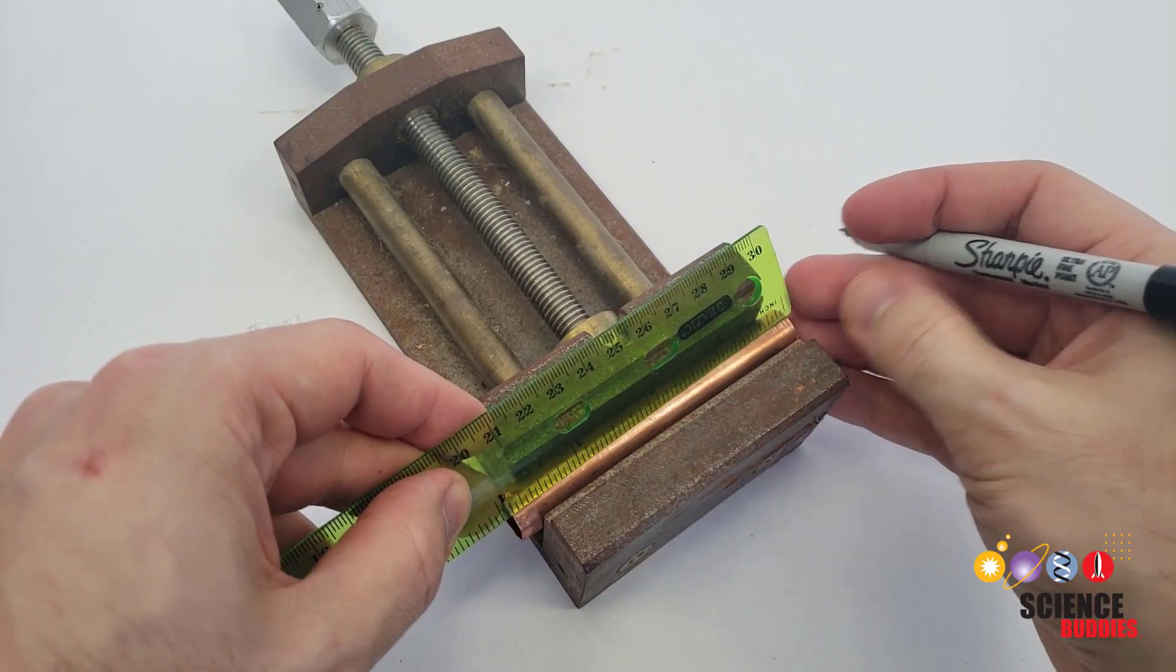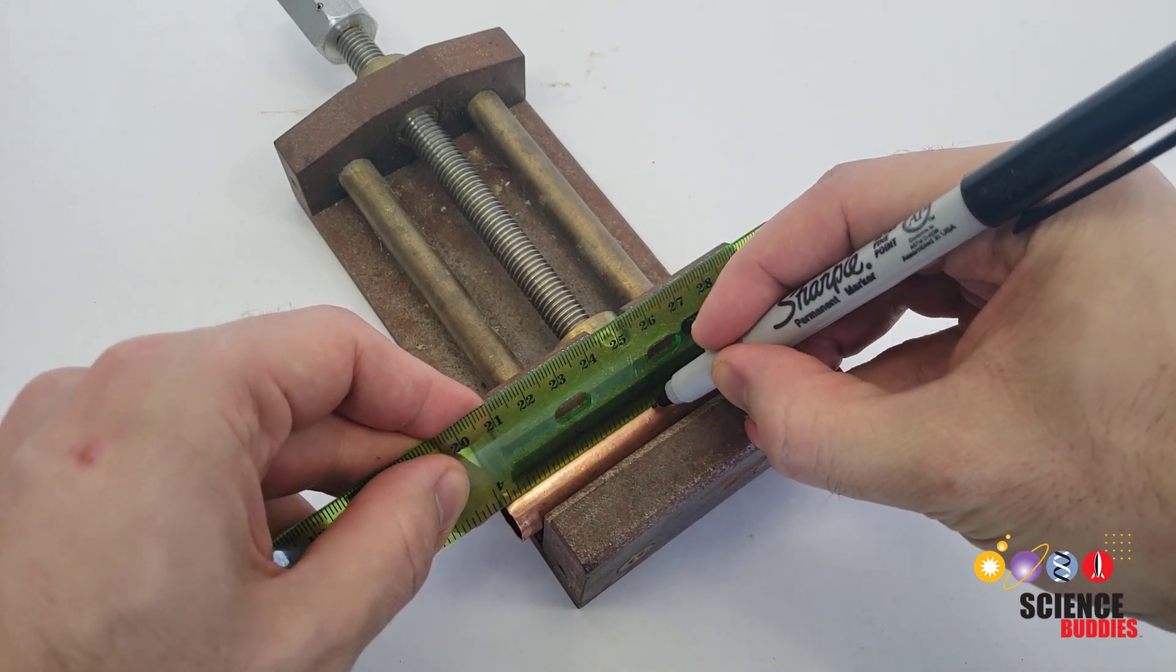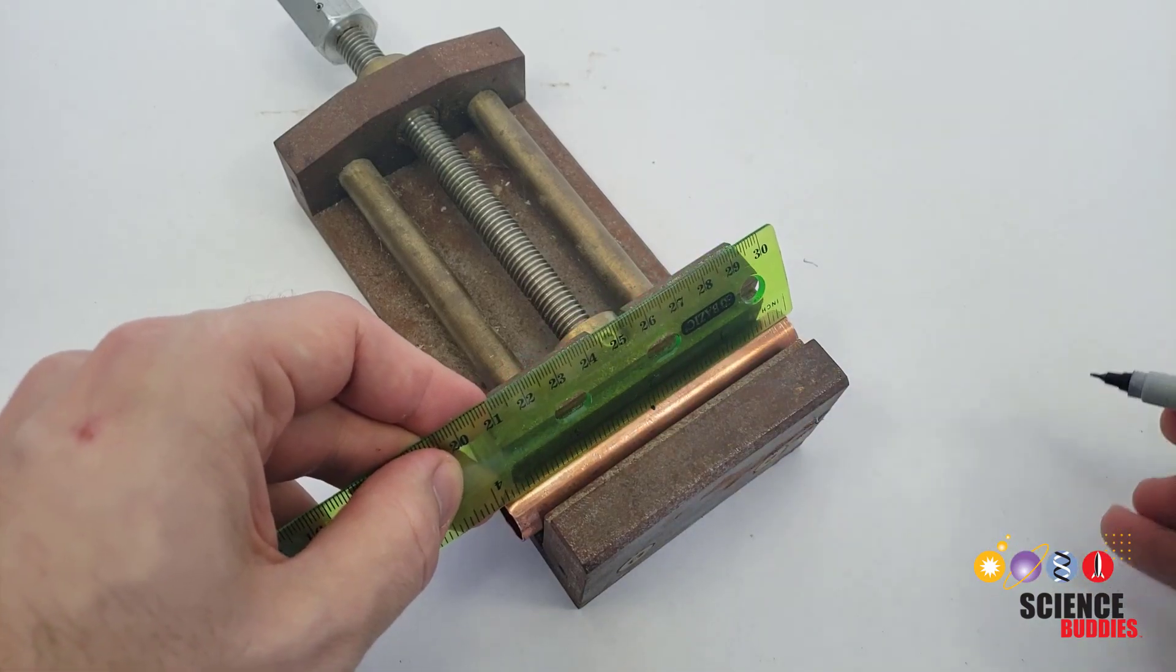Next up, you'll need to carefully mark the exact center of your pipe. This may be easier if you put it in a vice first, since you'll need it there anyway to drill a hole in the next step.